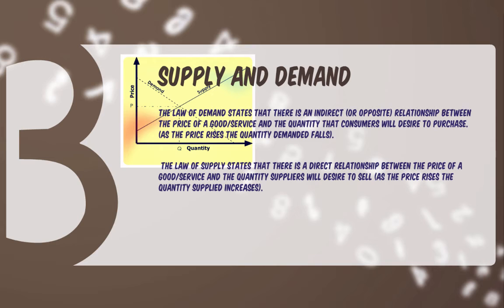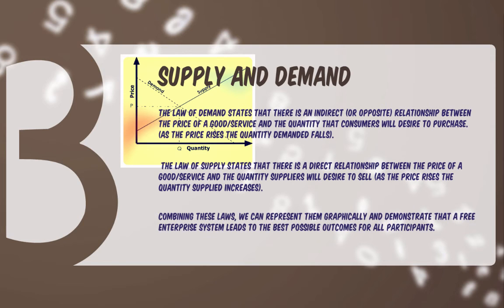So as the price of berry pies rises, for example, Gus desires to produce and sell more. When we combine these laws, we represent them graphically and demonstrate that a free enterprise system leads to the best possible outcomes for all participants. The interaction of supply and demand leads to the optimal price given the relative value of all the resources that exist.